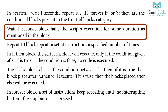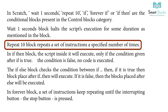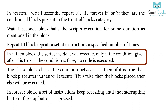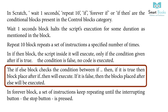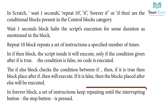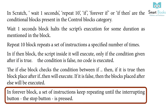Wait one second block helps pause the script's execution for some duration as mentioned in the block. Repeat 10 block repeats a set of instructions a specified number of times. If-then block: the script inside it will execute only if the condition given after 'if' is true; if the condition is false, no code is executed. The If-else block checks the condition — if it is true, the block placed after 'if-then' will execute; if false, the block placed after 'else' will be executed. In the Forever block, a set of instructions keeps repeating until the stop button is pressed.